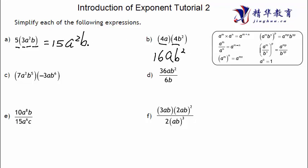This one is a little tricky. Seven times negative three — constant times constant — is negative 21. Then A squared times A to the first: power times power equals power added, so A to the power of three. Then B to the fifth times B to the sixth gives B to the power of 11.